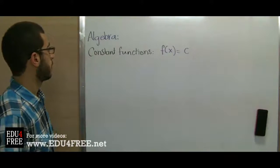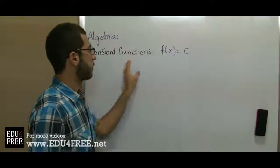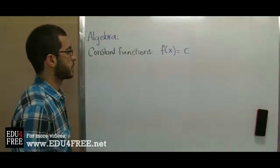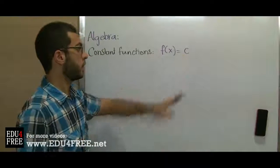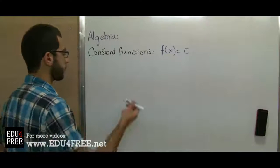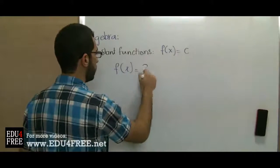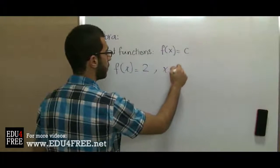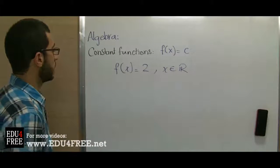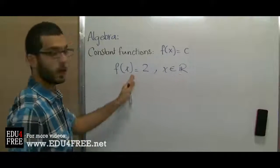As-salamu alaykum. Today we'll talk about constant functions, which have the formula f(x) = c. This is one of the simplest types of functions because there aren't any variables. All we need to know is the interval to which x belongs. For example, f(x) = 2 for all x belonging to the set of real numbers ℝ, so at any value of x, y will equal 2.